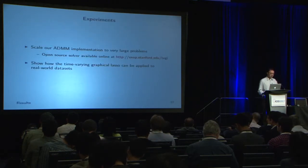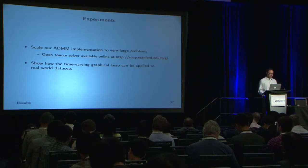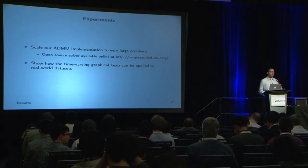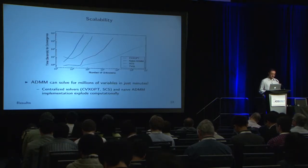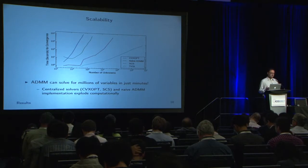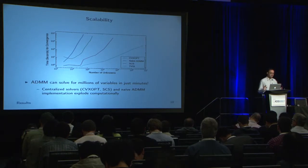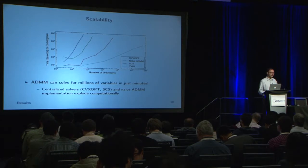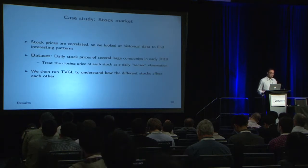We implemented our TVGL solver — it's available online and I'll share a link at the end. In terms of scalability, our algorithm can solve for millions of variables in minutes: we solve for 5 million variables in under 10 minutes. Centralized solvers and naive ADMM without our closed-form solutions are cubic in problem size and can't scale beyond a few thousand variables, whereas we can easily handle millions, even up to hundreds of millions.